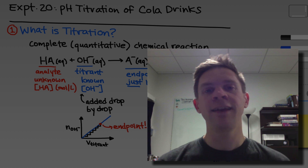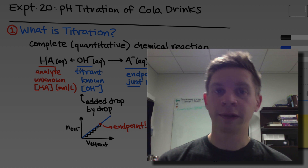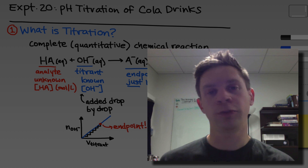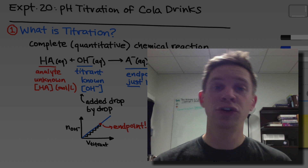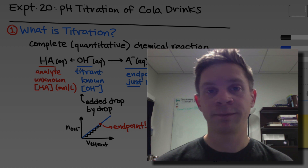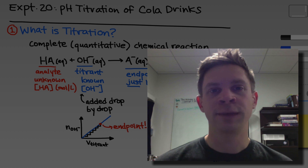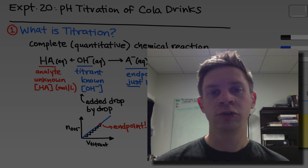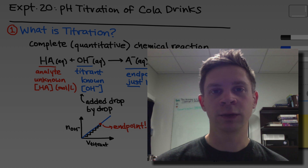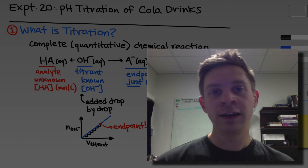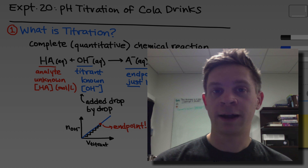The basic idea behind any titration is to use a complete and quantitative chemical reaction to assess the concentration of an unknown species called the analyte, using a known concentration of a species called the titrant that reacts completely with the analyte. For the specific case of acid-base titrations, in addition to figuring out the concentrations of acids or bases in solution, we can also learn some valuable lessons about chemical equilibrium and use the results of titration to calculate, for example, Ka values. In this video, we'll talk about how that works and explore the theory behind titrations.